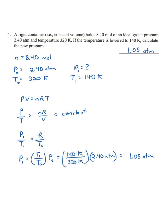Question four: A rigid container, so constant volume, holds n = 8.40 moles. The pressure is 2.40 atmospheres, temperature is 320 Kelvin. If the temperature is lowered to 140 Kelvin, what is the pressure? So we have P0 and T0, P1 is the question, and T1 is 140 Kelvin.